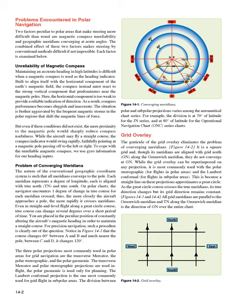Problem of converging meridians. The nature of the conventional geographic coordinate system is such that all meridians converge to the pole. Each meridian represents a degree of longitude, each is aligned with true north and true south. On polar charts, the navigator encounters one degree of change in true course for each meridian crossed. Thus, the more closely the aircraft approaches a pole, the more rapidly it crosses meridians. Even in straight and level flight along a great circle course, true course can change several degrees over a short period of time. You are placed in the peculiar position of constantly altering the aircraft's magnetic heading in order to maintain a straight course.